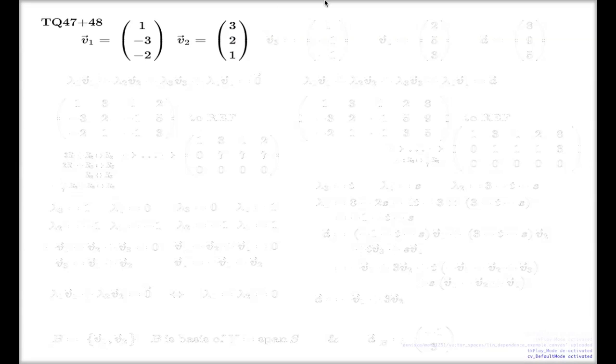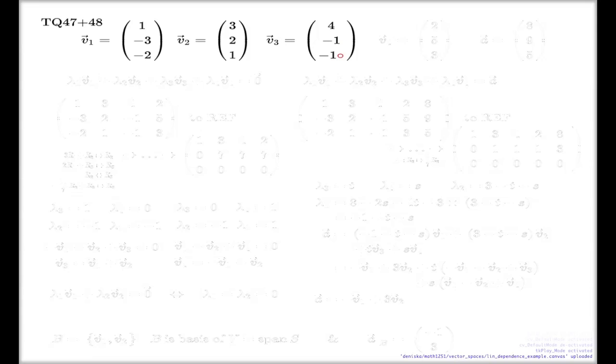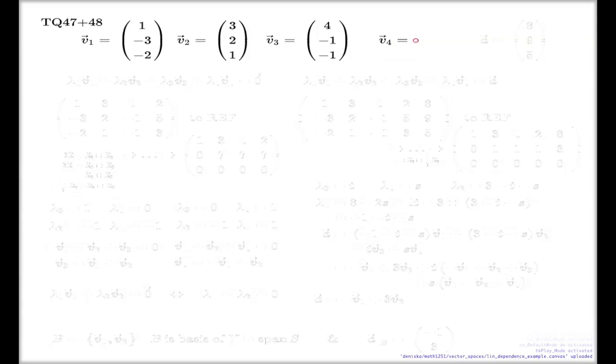My vector v1 is (1, -3, -2). My vector v2 is (3, 2, 1). My vector v3 is (4, -1, -1). And here's the fourth vector v4: (2, 5, 3).